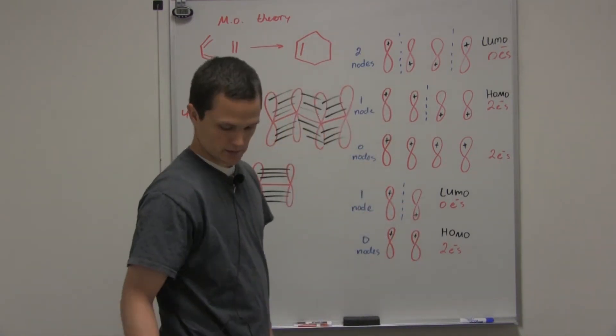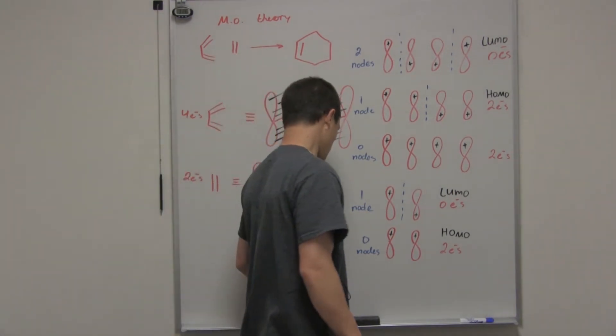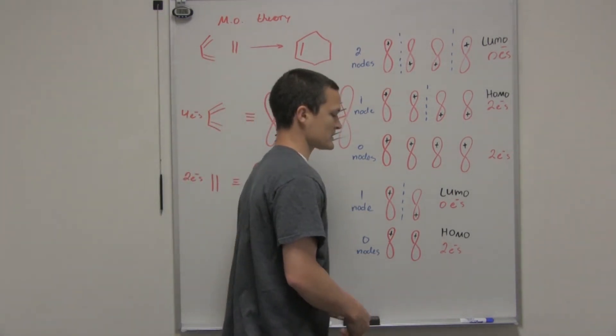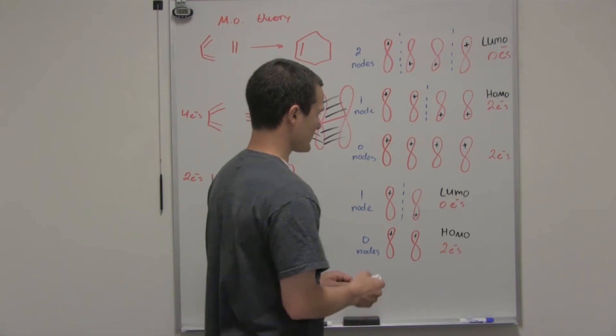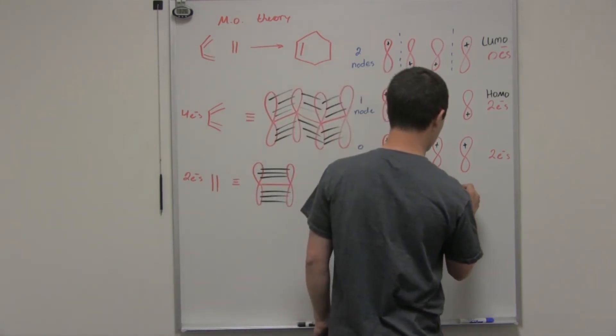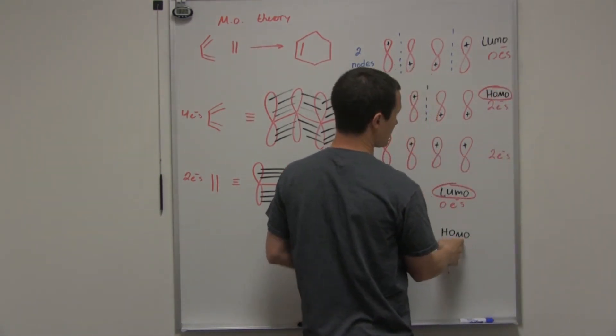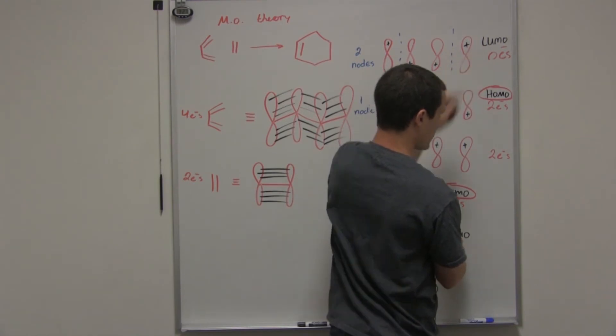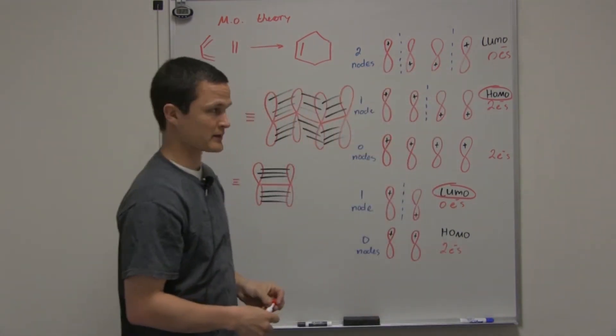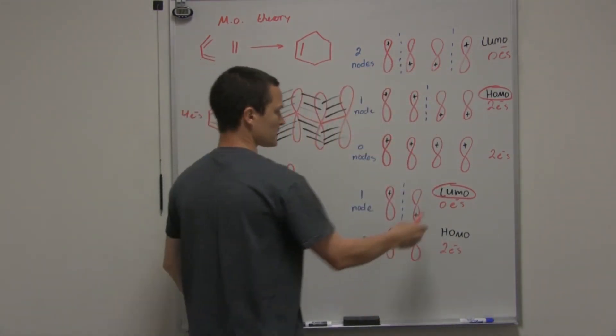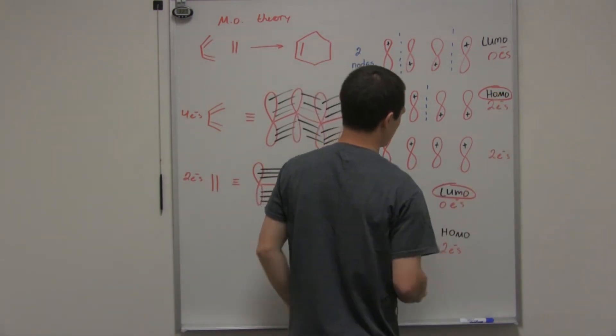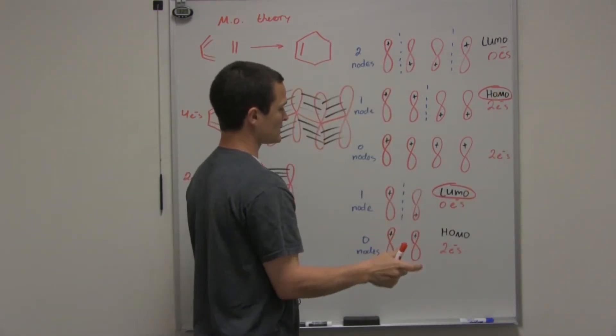Now, simply all you need to do to determine if two things are symmetry allowed or symmetry forbidden is we can compare this LUMO with this HOMO, or we can compare this HOMO with this LUMO. It doesn't matter. It's going to give us the same result. I'm just going to look at the two that I've circled and compare it and see if the ends line up.